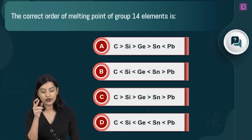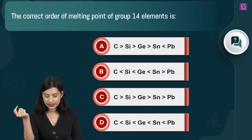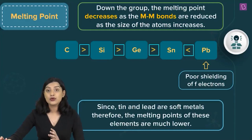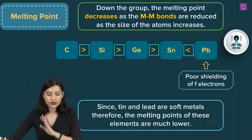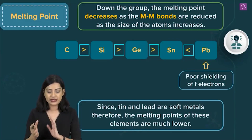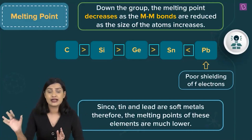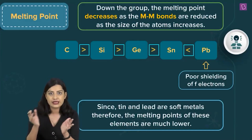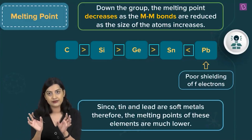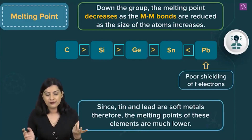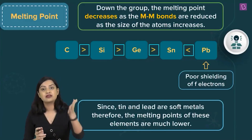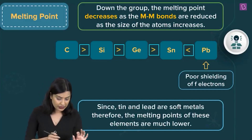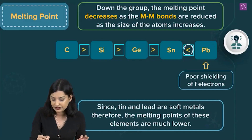The next question asks for the correct order of melting points of group 14 elements. The general trend is that melting point decreases as we go down the group because M–M bond strength decreases as atomic size increases. This is the expected progressive decrease from carbon down to lead.